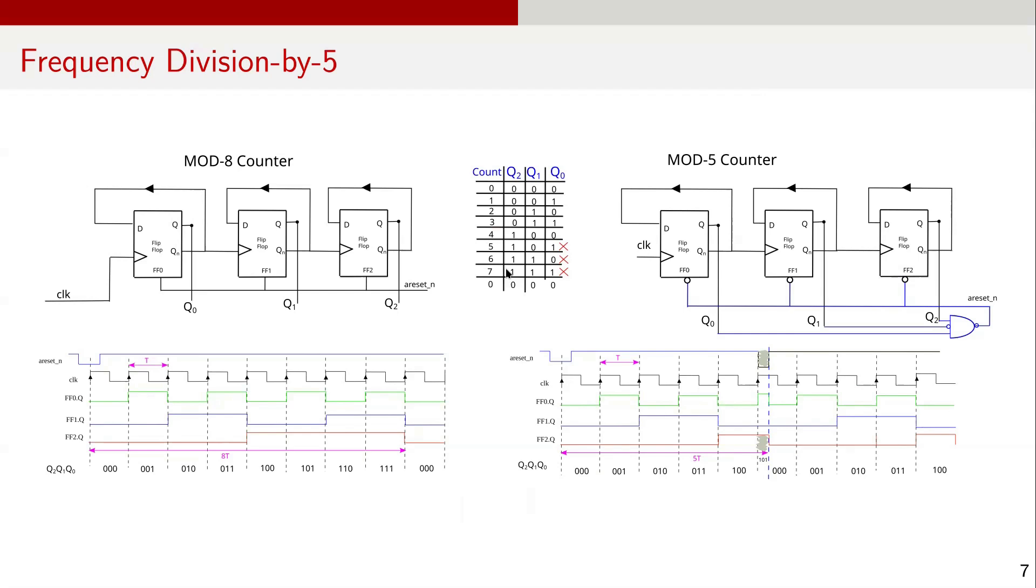In general, 3 flip-flops count from 0 to 7. To restrict the count from 0 to 4, we detect the binary sequence 101 and reset the counter to 000. Practically, we assert reset when FF2Q is 1, FF1Q is 0 and FF0Q is 1. Effectively, the counter reaches state 101 for a brief moment before being cleared to 000, generating the sequence 0, 1, 2, 3, 4 and back to 0. That is the mod 5 counter.